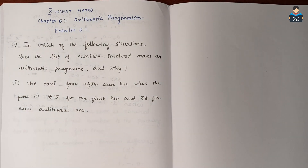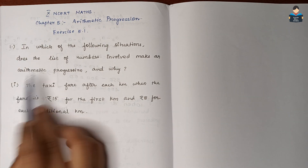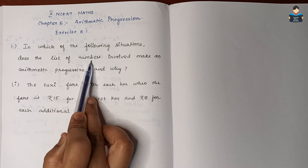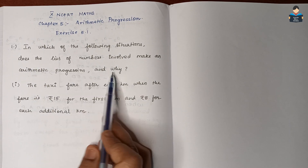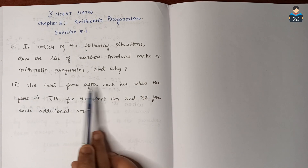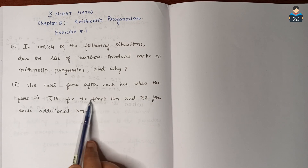Hello everyone, welcome to our channel. In this video we cover 10th standard NCERT Math Chapter 5, Arithmetic Progression, Exercise 5.1, Question 5. The first subdivision asks: in which of the following situations does the list of numbers involved make an arithmetic progression, and why? First subdivision: the taxi fare after each kilometer when the fare is 15 rupees for the first kilometer.